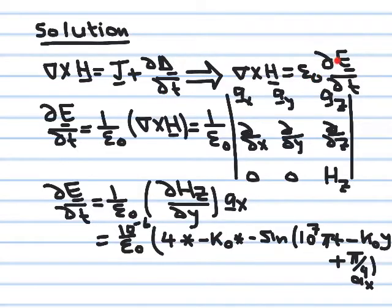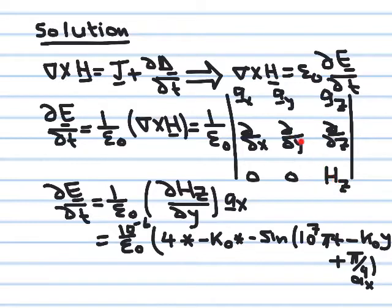We expand the curl using the determinant form. H has only an H_z component, and H_z is a function of y, so the other two rows are zero. Expanding, the only non-zero component comes from canceling the appropriate row and column, giving partial H_z partial y in the x-direction. We now differentiate H_z, which is 4 cosine(10^7 π t minus k_naught y plus π/4).